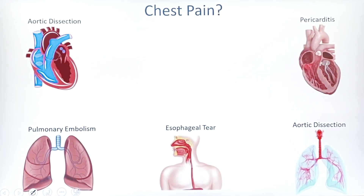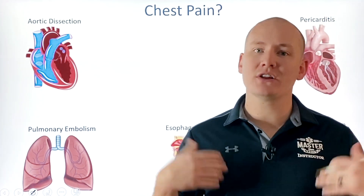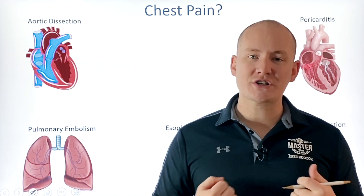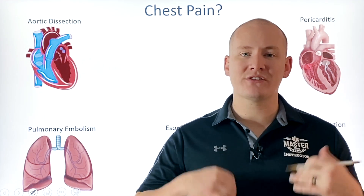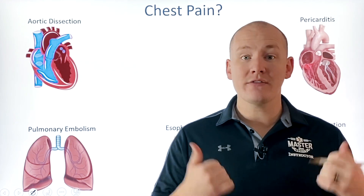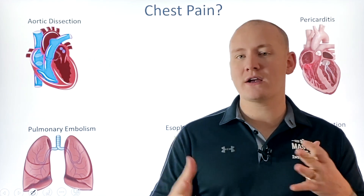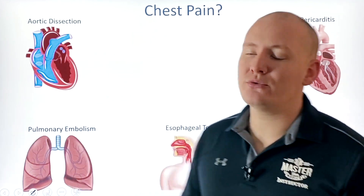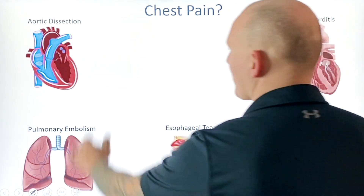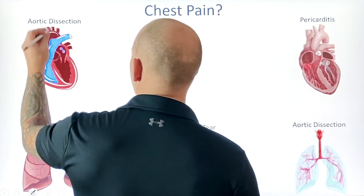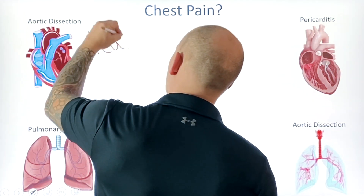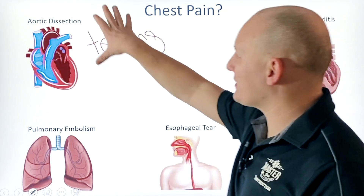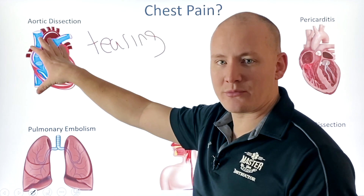Chest pain can mean a world of different things. Myocardial infarctions classically present as a squeezing, tightening, crushing type of pain, which is descriptive of an ischemic injury to the heart. But when it comes to other chest pain emergencies, aortic dissection typically presents more as a sudden tearing or ripping pain — that's a typical descriptor we associate with aortic dissections.